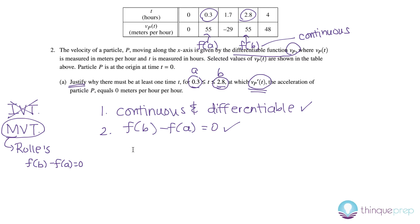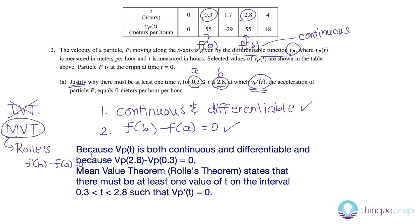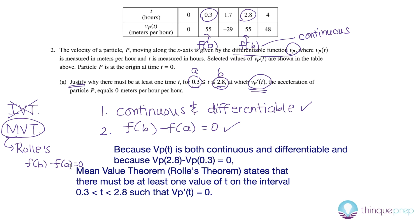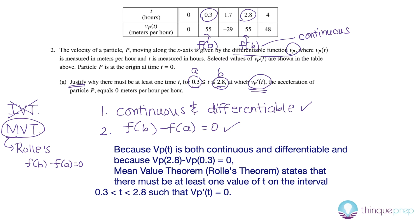So, then if I wanted to answer the question, I'd probably say something like this. Because vp(t) is both continuous and differentiable, and because vp(2.8) minus vp(0.3) is 0, mean value theorem, or you can say Rolle's theorem, states that there must be at least one value of t on the interval such that vp'(t) is equal to 0. And that should be enough to get you to answer question 2, part a.